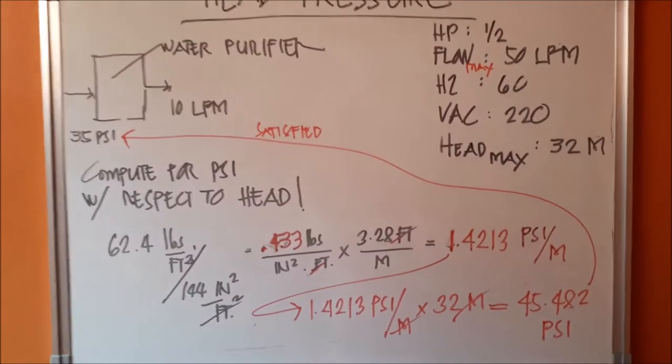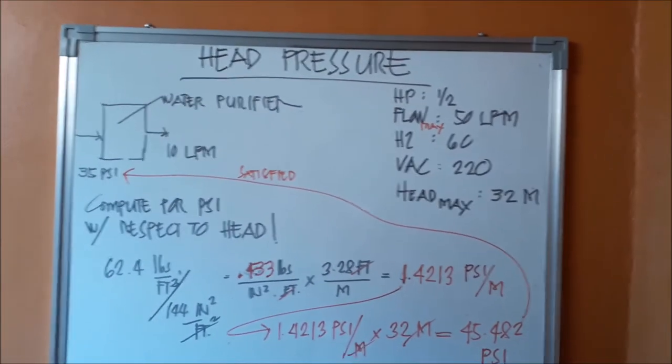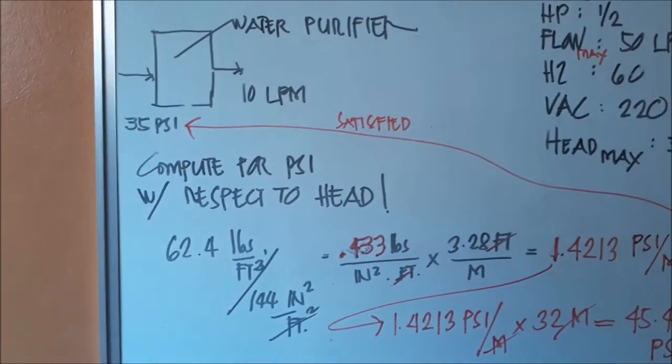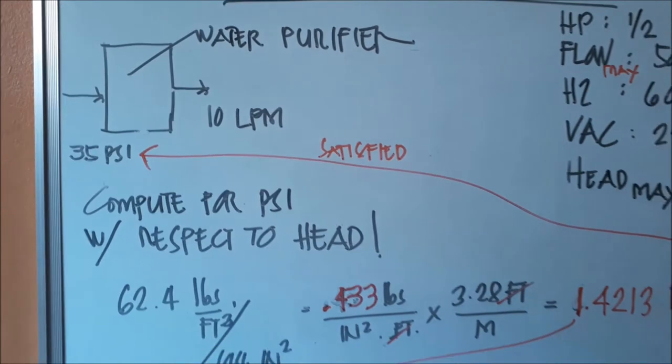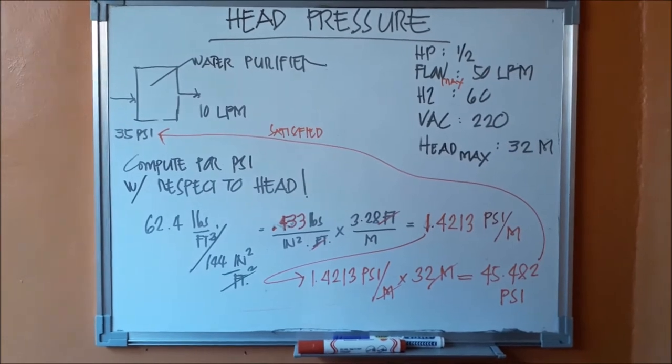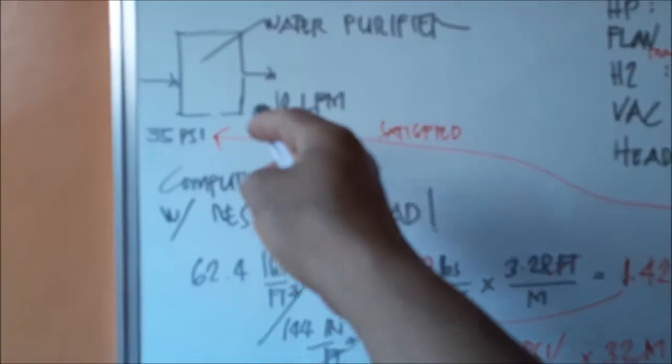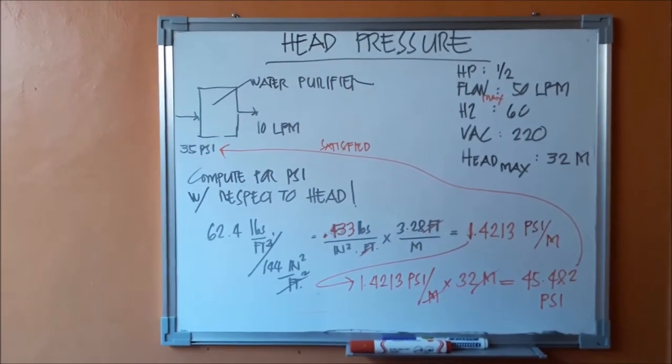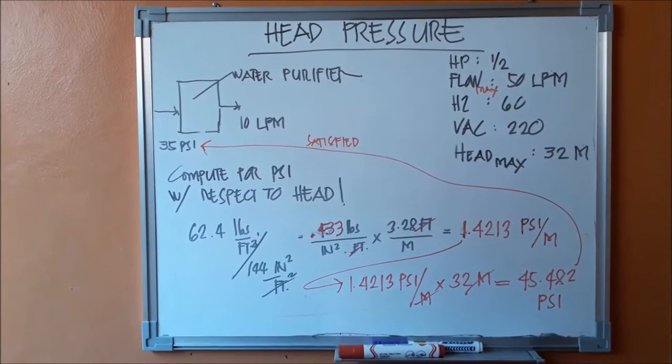Assuming we have a water purifier, and the inlet pressure requirement is 35 PSI. Now if our water supply comes from the water utility company and their pressure is below that 35 PSI, we won't be able to get the required flow or filtered water flow. If it's below 35 PSI, the water purifier outlet flow will be very low, not satisfactory for the designed water purifier flow.